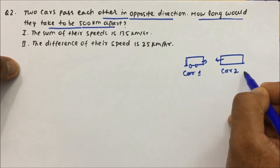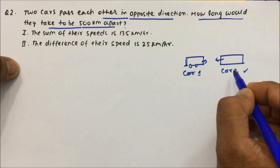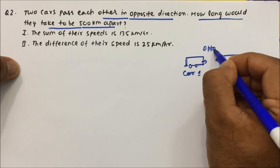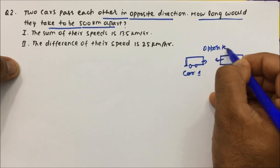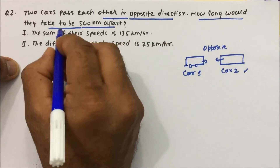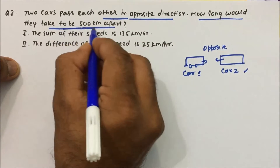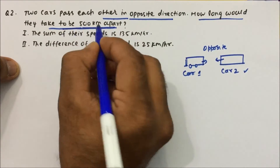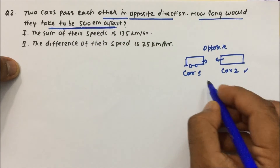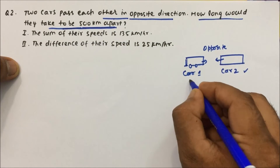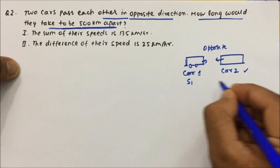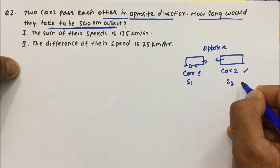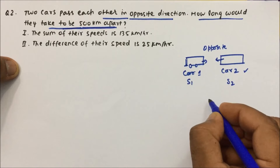Question number 2: Two cars pass each other in opposite directions. Suppose this is Car 1 and this is Car 2, and they are moving in opposite directions. How long would they take to be 5 kilometers apart? Suppose the speed of Car 1 is s1 and the speed of Car 2 is s2.